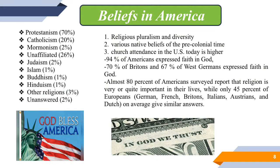Beliefs in the USA include first, religious pluralism and diversity; second, various native beliefs of the pre-colonial time; and third, church attendance in the United States today is very high. For example, 94% of Americans expressed faith in God, compared to 70% of Britons and 67% of Western Germans. Almost 80% of Americans surveyed report that religion is very or quite important in their lives, while only 45% of Europeans on average give similar answers. In the United States, Protestants make up about 70%, Catholics about 20%, and others hold the minority.